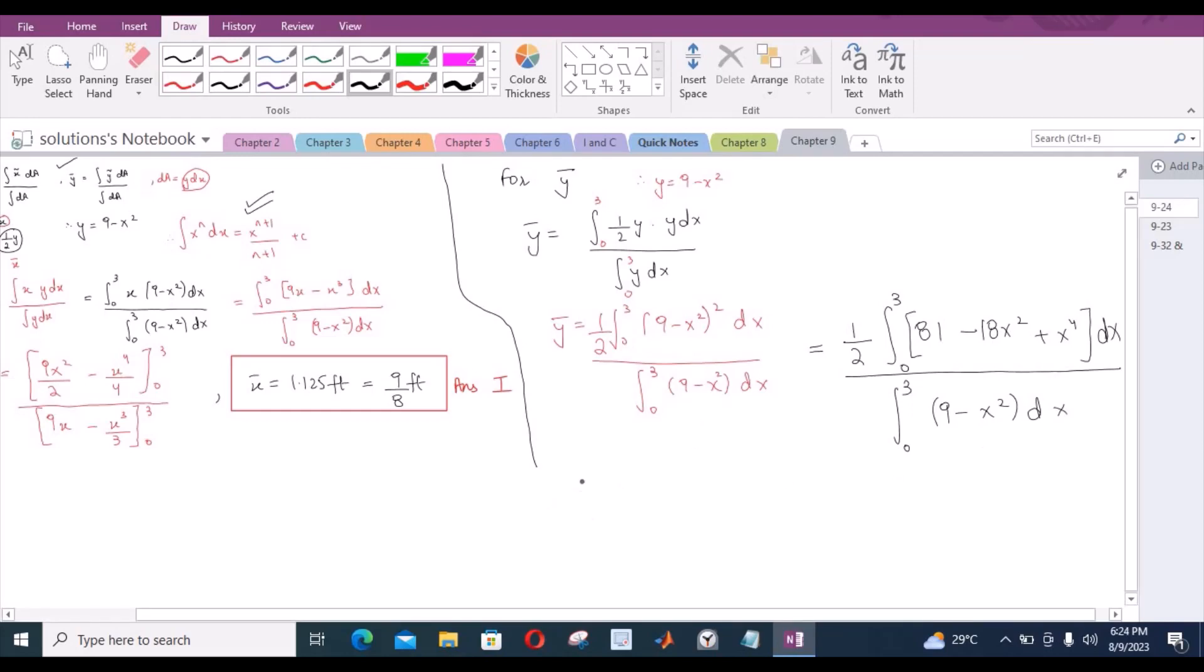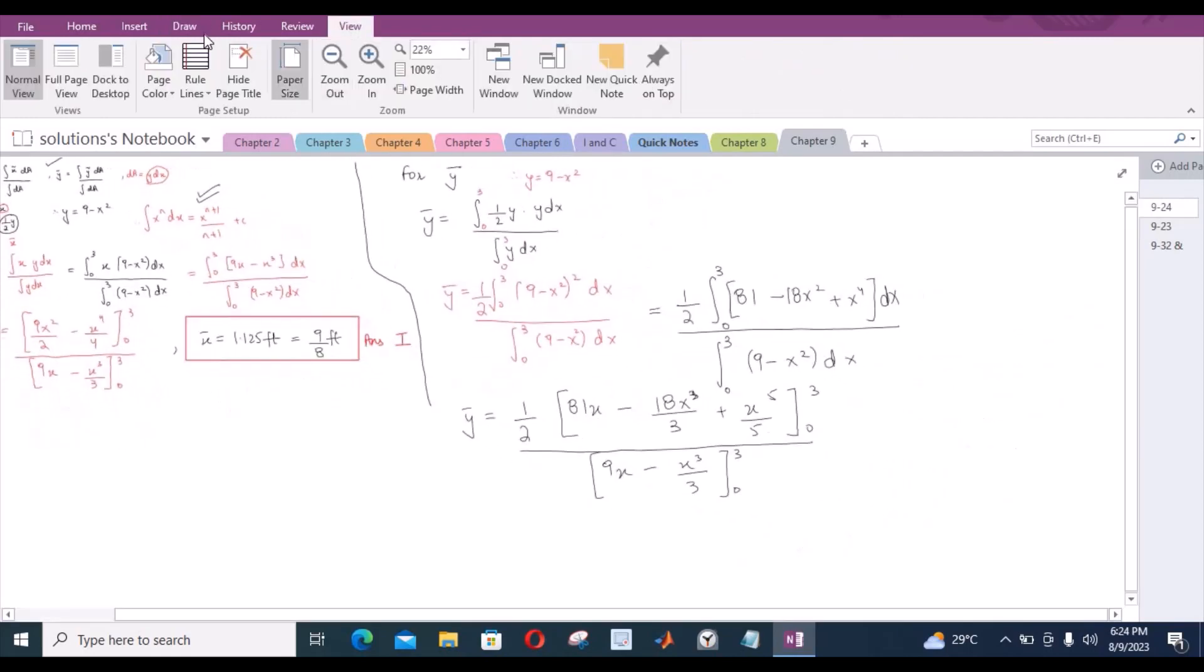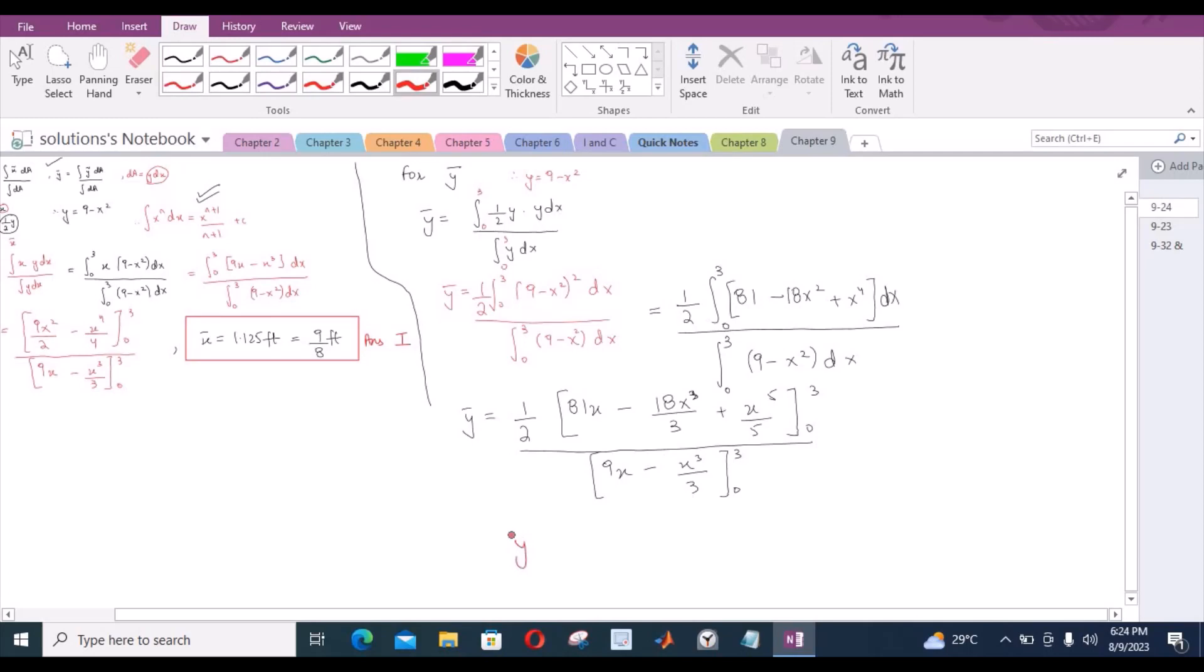So upon further simplifications, y bar equals half of 81x minus 18x cubed upon 3 plus x to the 5th minus x to the 5th divided by 5 from 0 to 3, divided by 9x minus x cubed upon 3 from 0 to 3. Now after substituting the limits, the y bar becomes 3.6 feet.